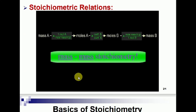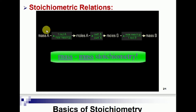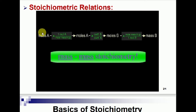The next concept is mass-mass stoichiometry. In this, you can find the mass of one substance when you have the mass of another substance. To convert mass of A into mass of B, follow these steps: first, convert the given mass into moles using molar mass.